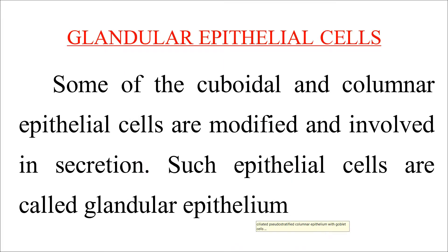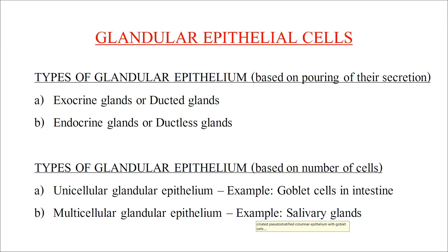Glandular epithelial cells: some cuboidal and columnar epithelial cells get modified and involve in secretion of enzymes and hormones for the body; such cells are called glandular epithelium. They are classified into exocrine glands (ducted glands) and endocrine glands (ductless glands). Based on the number of cells, they may be unicellular — like goblet cells in the intestine — or multicellular, like salivary glands.